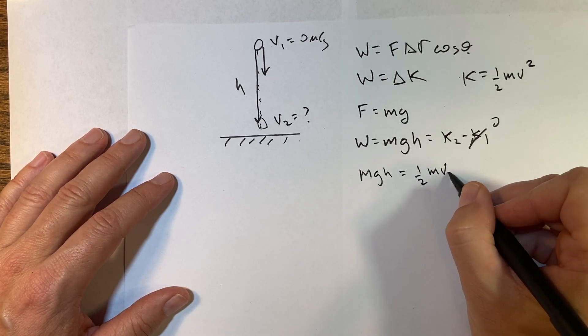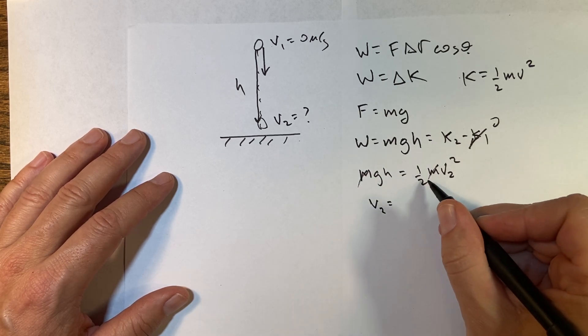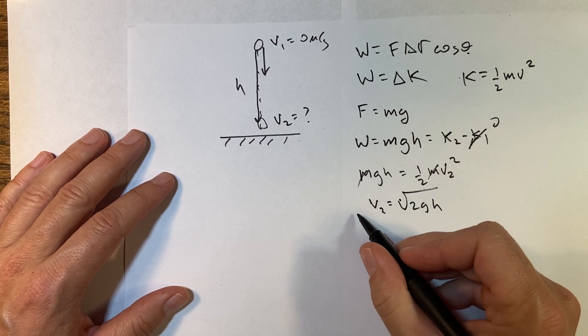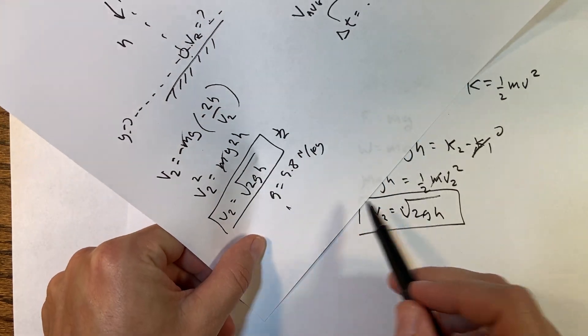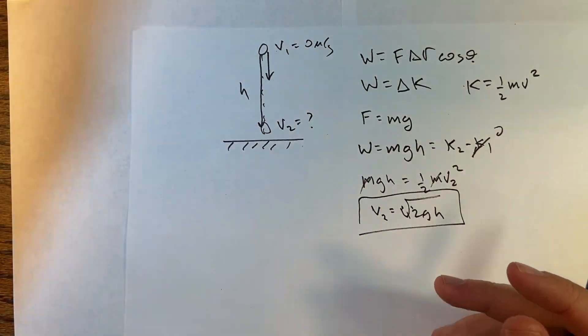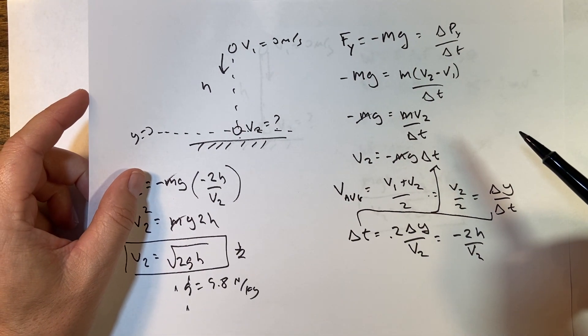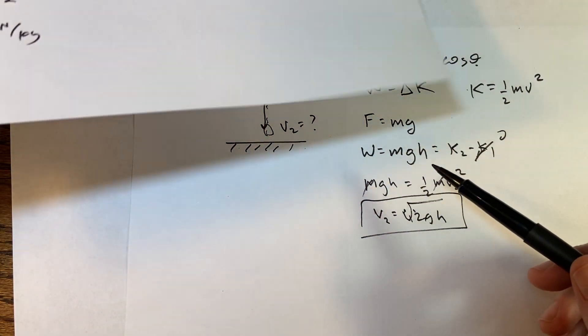So now I get mgh equals one-half m v2 squared. Masses cancel. v2 equals the square root of 2gh. Ba bam, ba bam! That's the same thing, right? Okay, now the question is which way was easier? This is an opinion, right? I think this is easier because here's the deal.